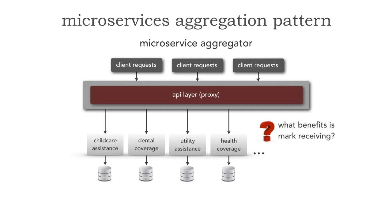What benefits is Mark receiving? There are 140 of those. I would have to make 140 separate RESTful calls in order to find out: does Mark have childcare? Does Mark have dental? Does Mark have utility? Does Mark have health?